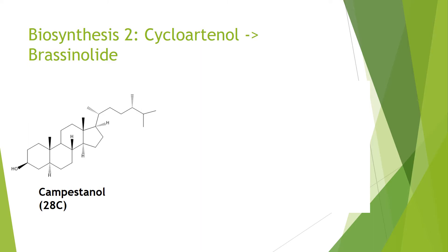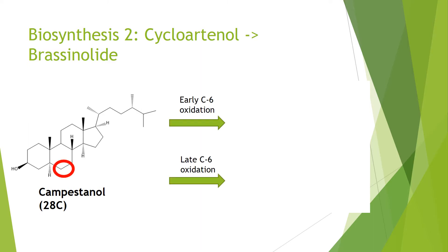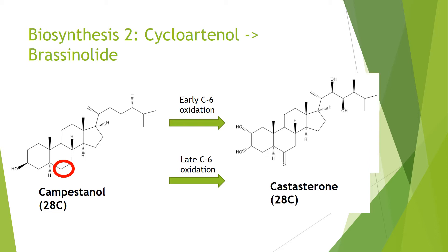Going from campestinol, we can see that the pathway branches. You can either follow an early C6 oxidation pathway or a late C6 oxidation pathway, with carbon 6 circled in red here. Both of these pathways converge again to form castasterone, which is also a 28-carbon molecule, with a ketone group at the C6 position and hydroxylations in the aliphatic chain. These are the rate-limiting steps of brassinosteroid synthesis, carried out by enzymes including DWF4 and CPD, which we will see later.